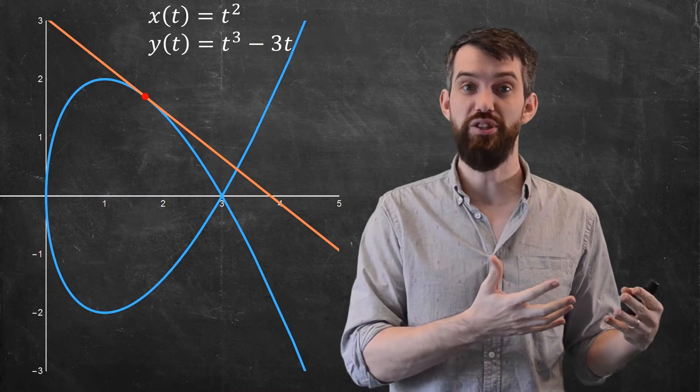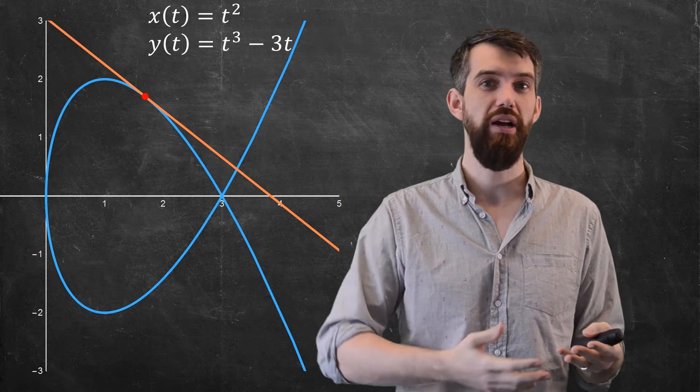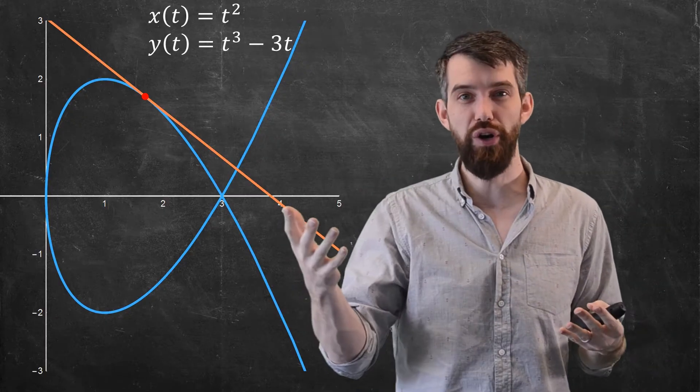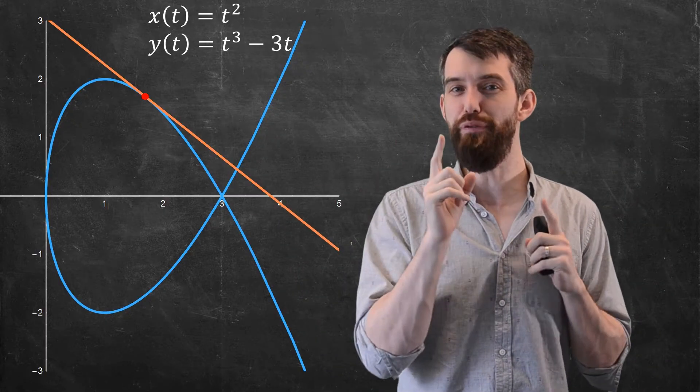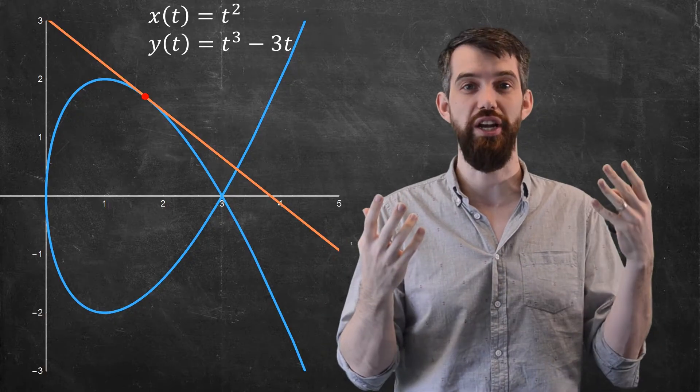When we've studied calculus in the past, there's many different geometric notions that we're interested in. For example, the slope of a tangent line, the area under a curve, the arc length of a curve. But when we did calculus before, we were always doing it for curves of the form y is a function of x.